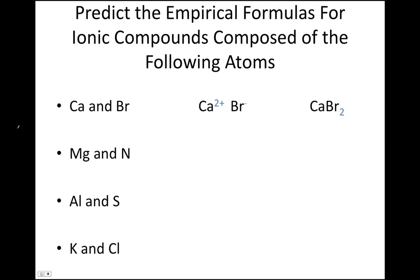Let's look at magnesium and nitrogen. Again, we can predict the charges on the ions using the periodic table. Magnesium will form an ion with a positive two charge, and nitrogen will form an ion with a negative three charge. If we flip-flop our superscripts, the formula for the ionic compound composed of magnesium and nitrogen will be Mg₃N₂.